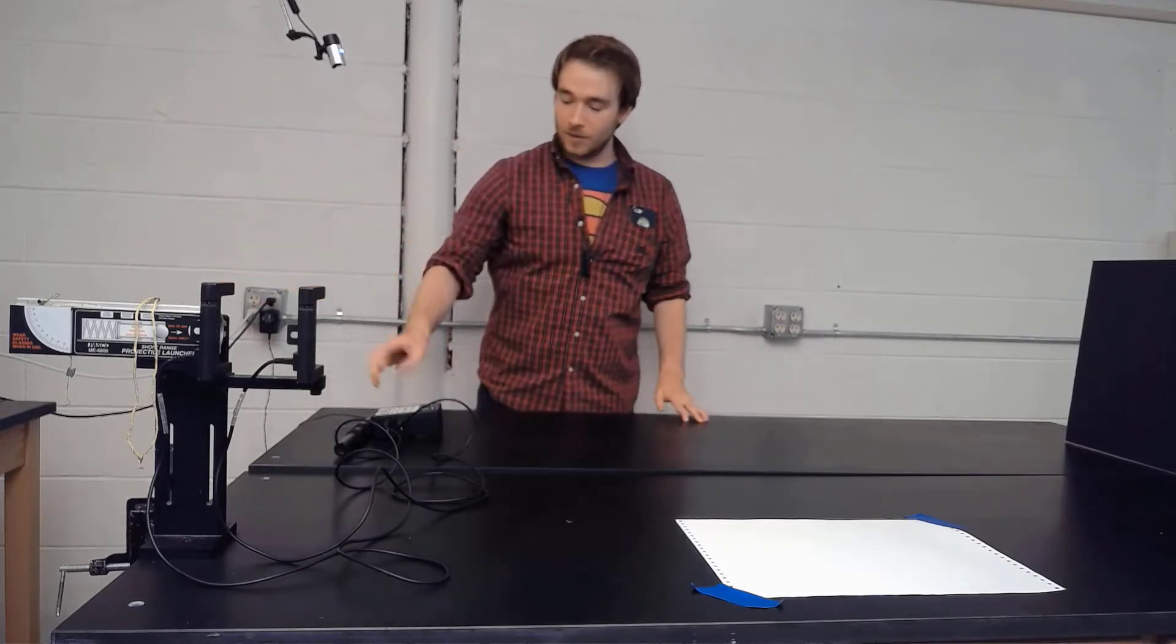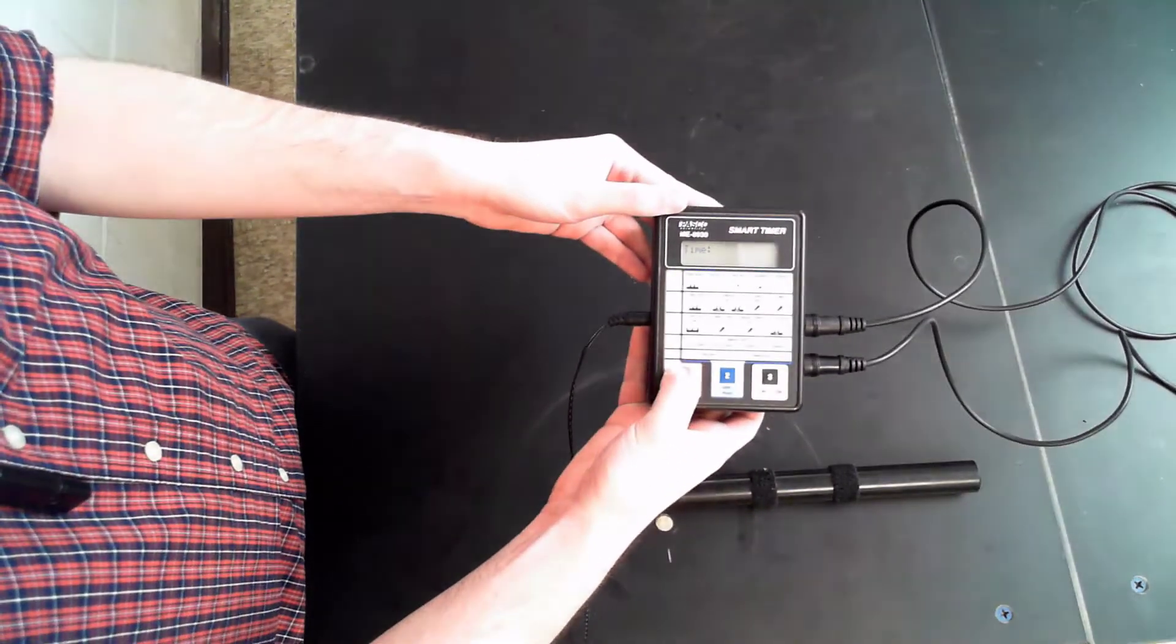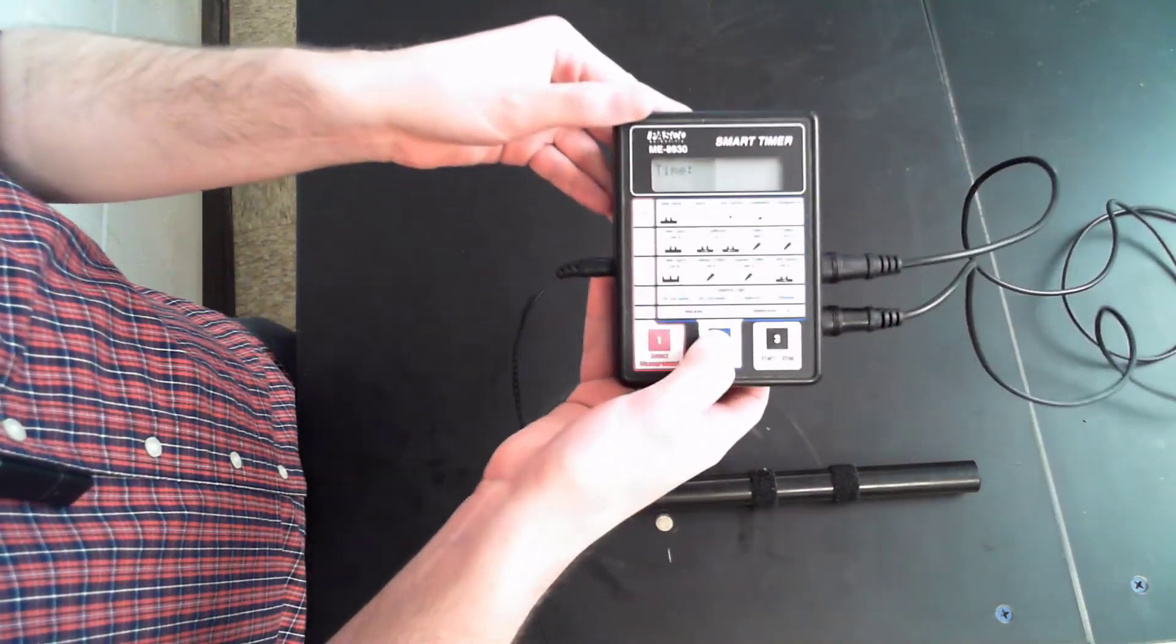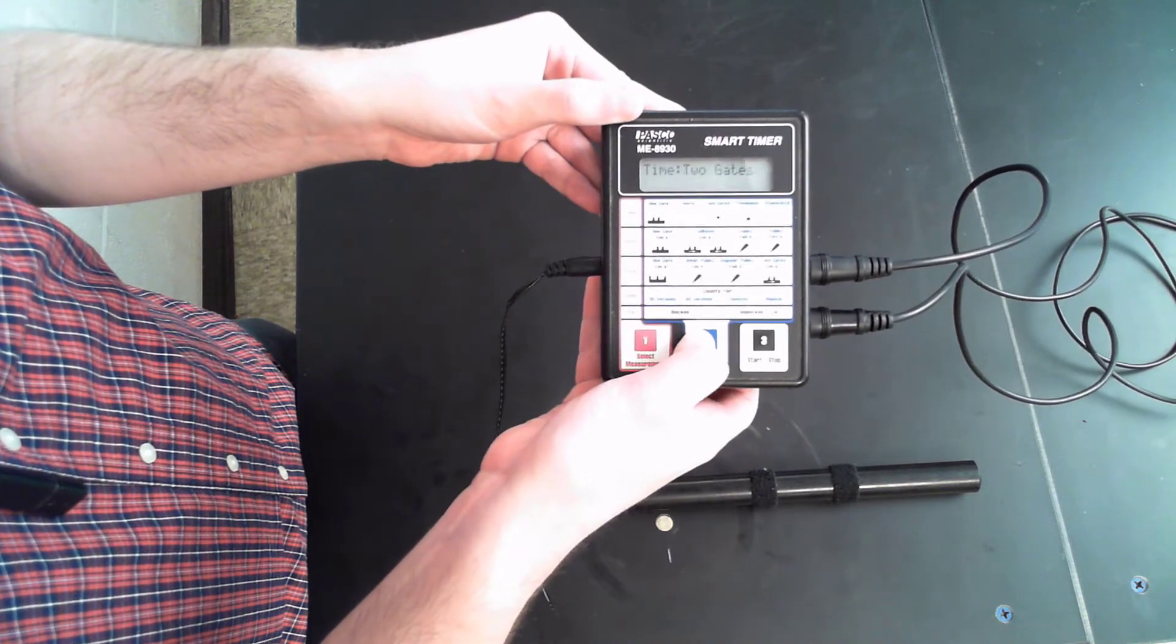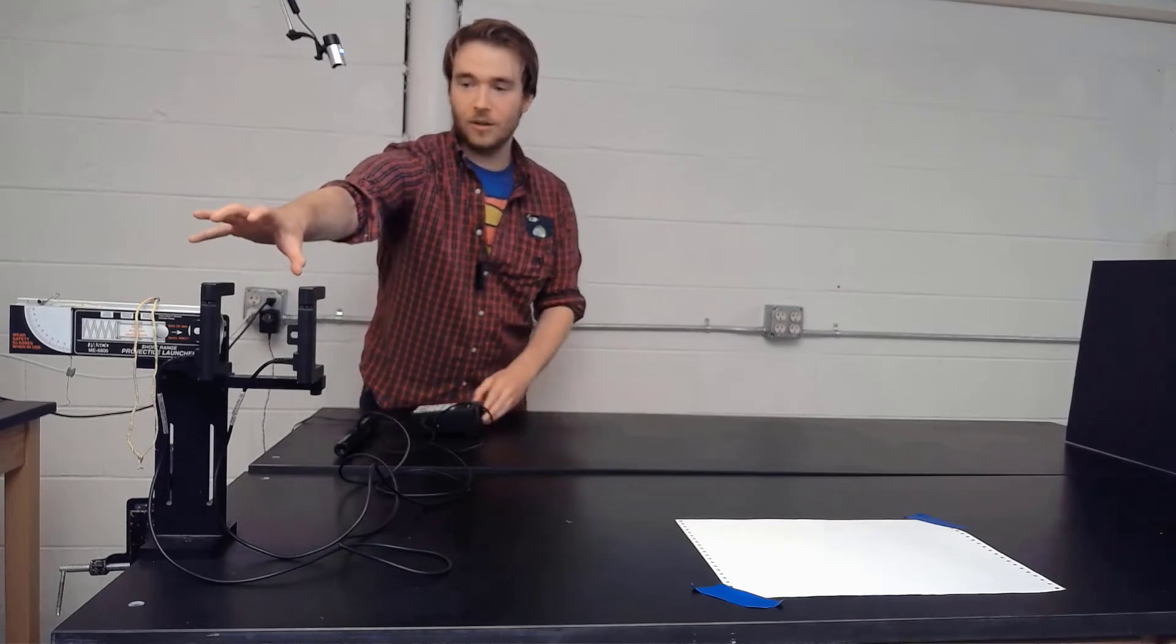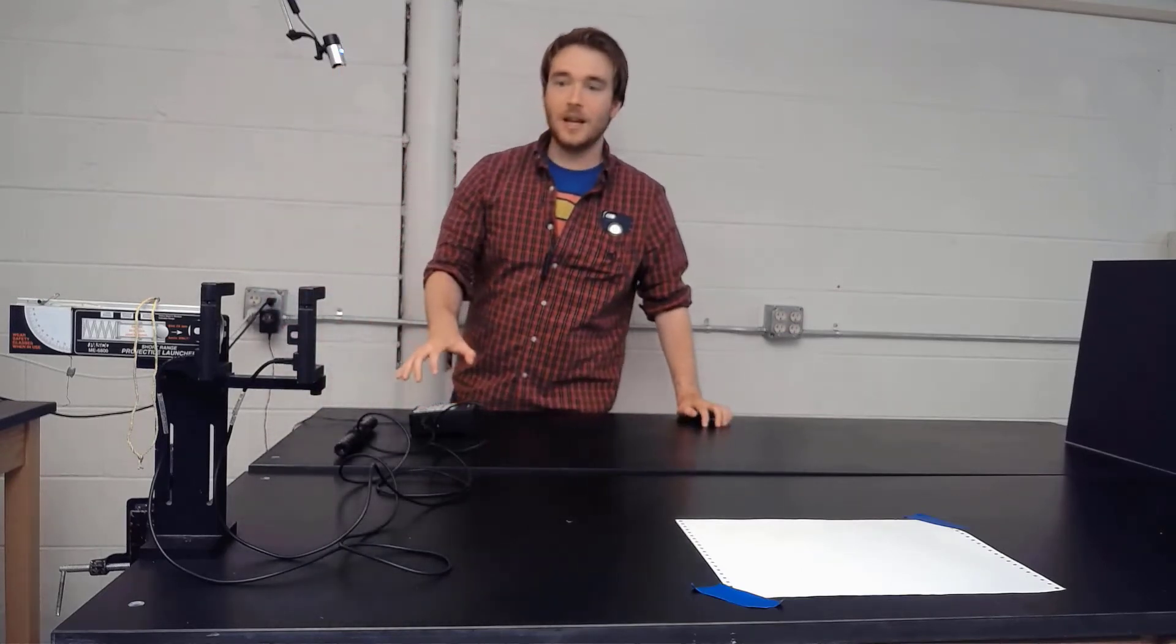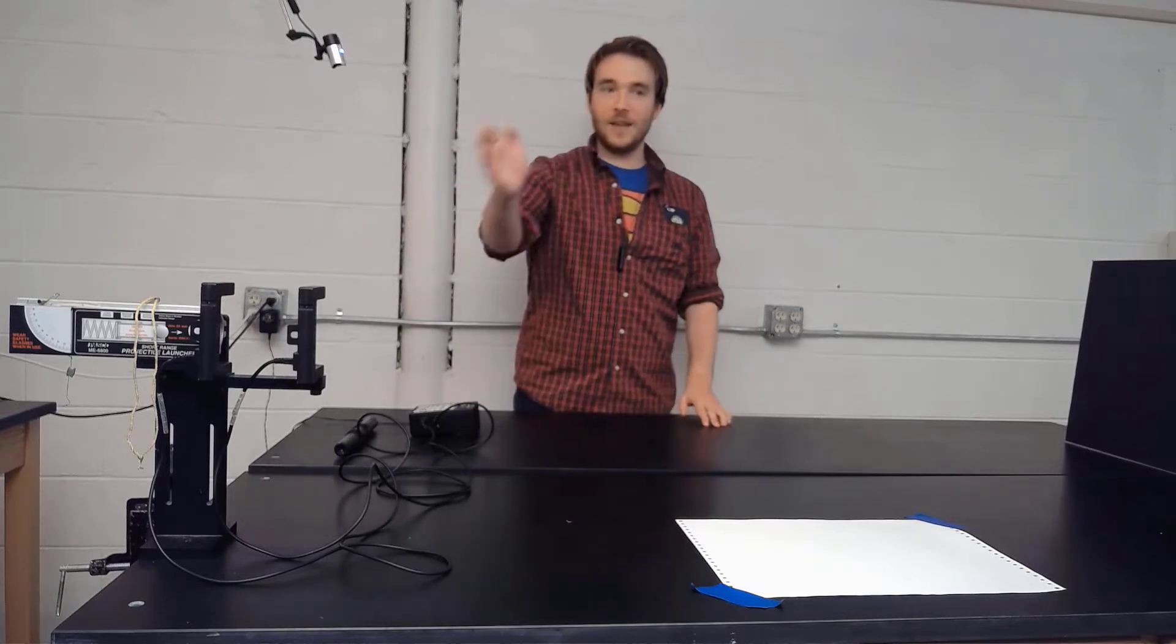So what that does is over here on the side I have this smart timer, and so we can select time measurement and then select that we have two different gates. And then when I pull the trigger on our projectile launcher here, it's going to measure the time it takes to get between the first gate and the second gate.